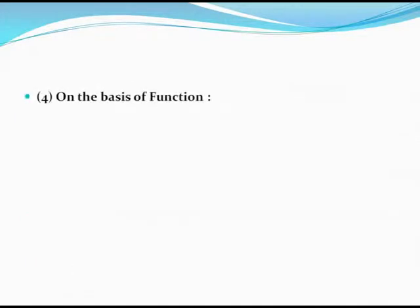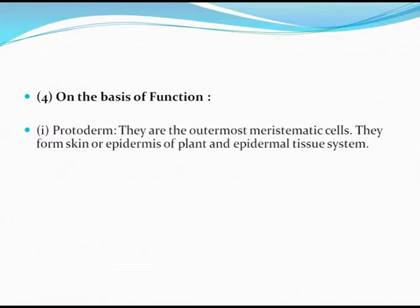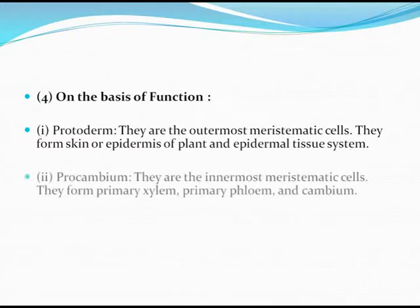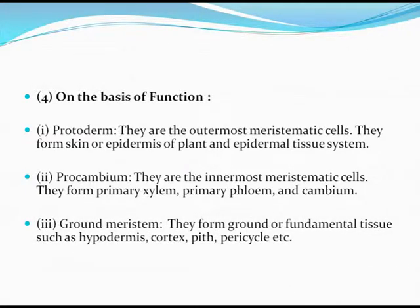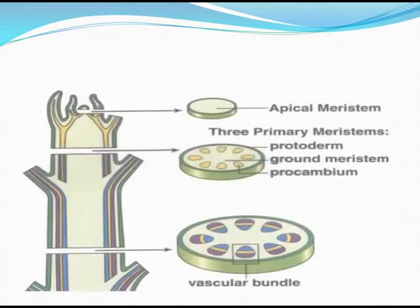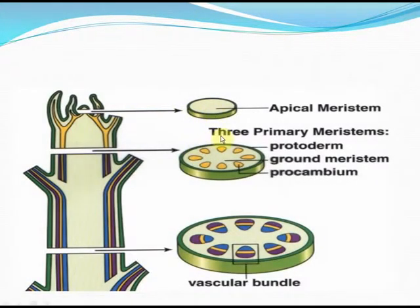On the basis of function: Protoderm are the outermost meristematic cells and form the epidermis and epidermal tissue system. Procambium are the innermost meristematic cells and form the primary xylem, primary phloem, and cambium. Ground meristem forms the ground or fundamental tissue such as the hypodermis, cortex, pith, or pericycle. The apical meristem gives rise to these three primary meristems: protoderm, ground meristem, and procambium.